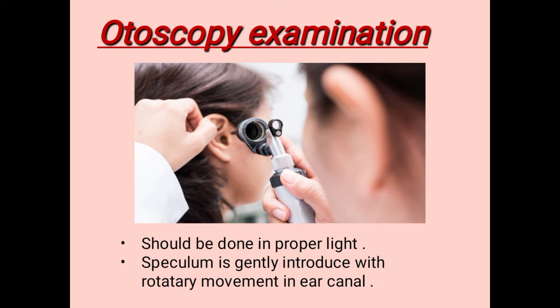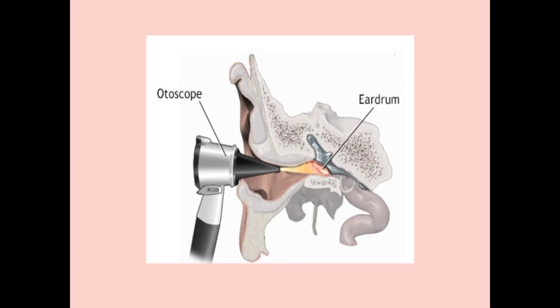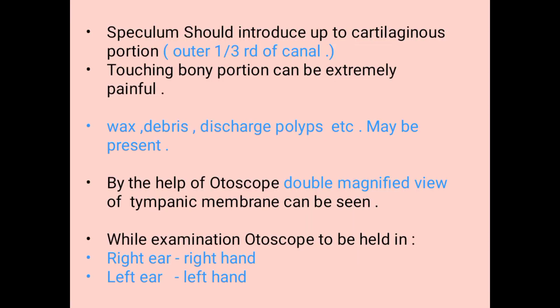The speculum is gently introduced with a rotatory movement into the ear canal. The speculum is introduced only up to the cartilaginous portion, which is one-third of the canal, because touching the bony portion is extremely painful. Things to note here are wax, debris, discharge, polyp, and so on.